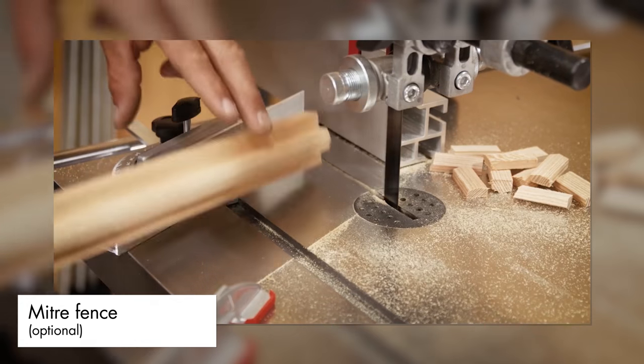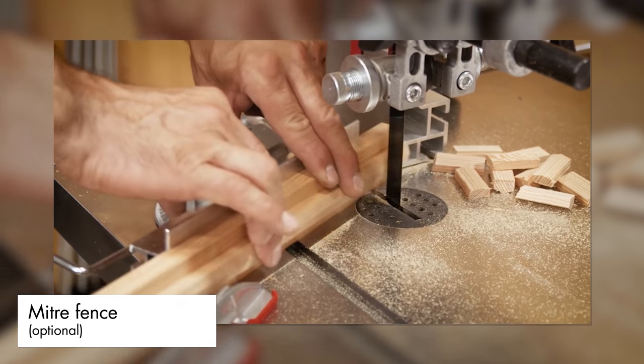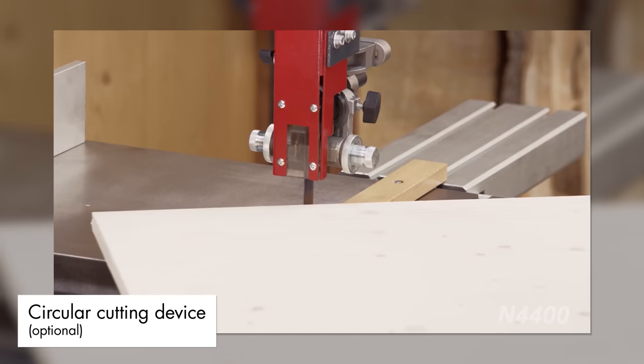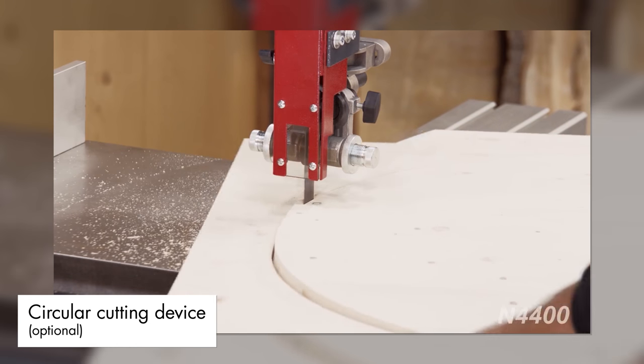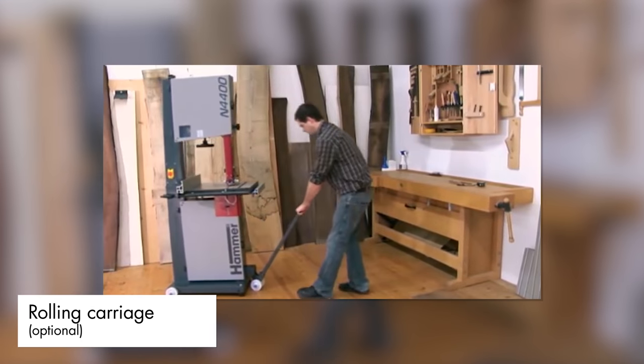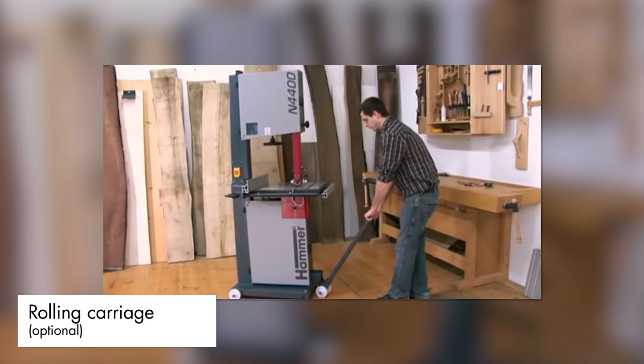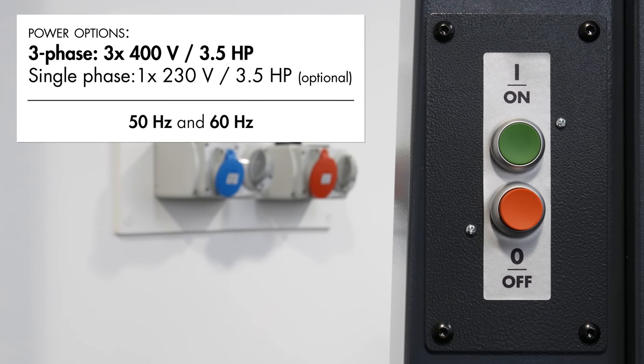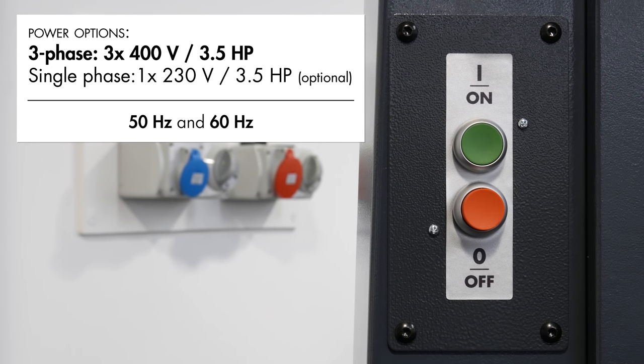Additional options include a miter fence that slots into the table groove and a circular cutting device for precise completion of curves or circles. As with all Hammer machines, the N4400 can be fitted with a rolling carriage for enhanced manoeuvrability and is available with both single phase and three phase power options with the latter fitted as standard.